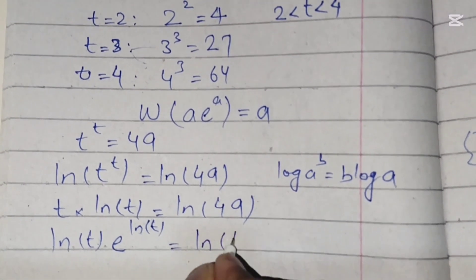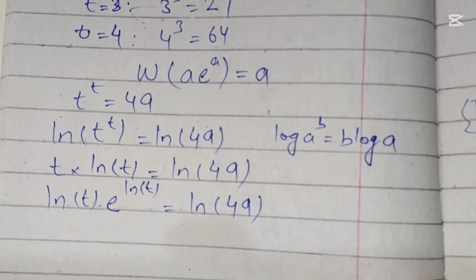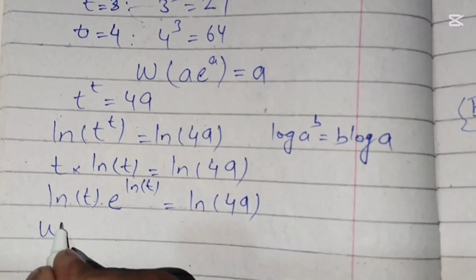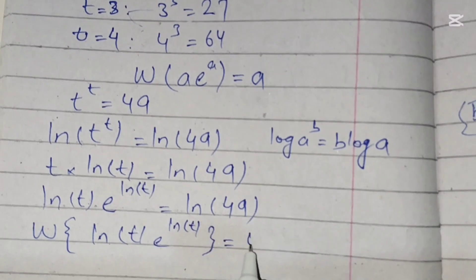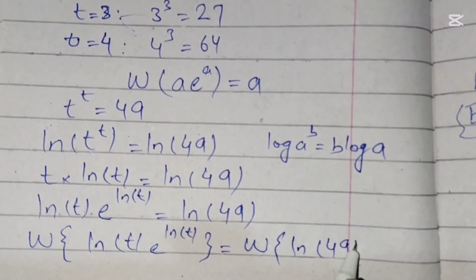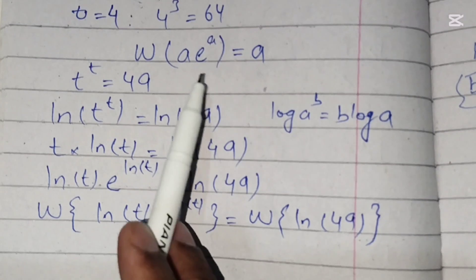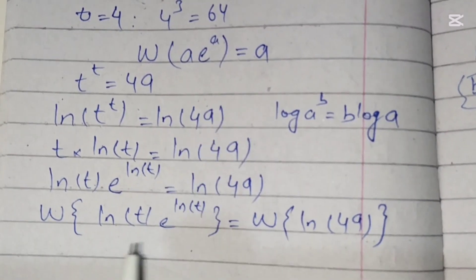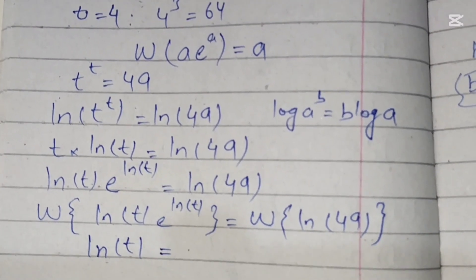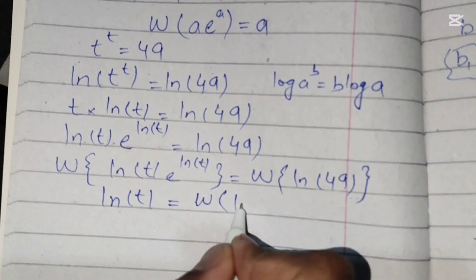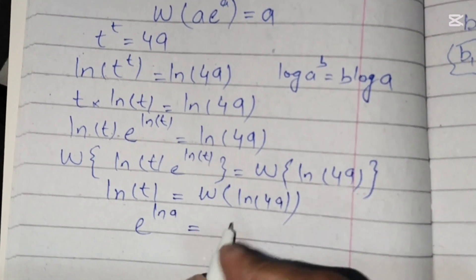Now we apply the Lambert W function to both sides. We have ln(t)·e^(ln t) = ln(49). Taking W on both sides and using the identity W(a·e^a) = a, we get ln(t) = W(ln(49)).